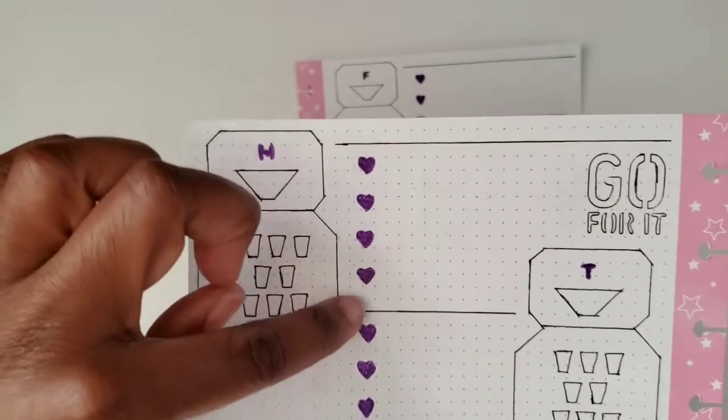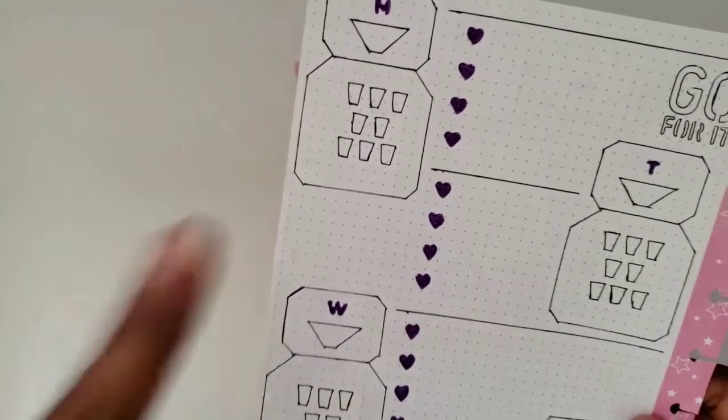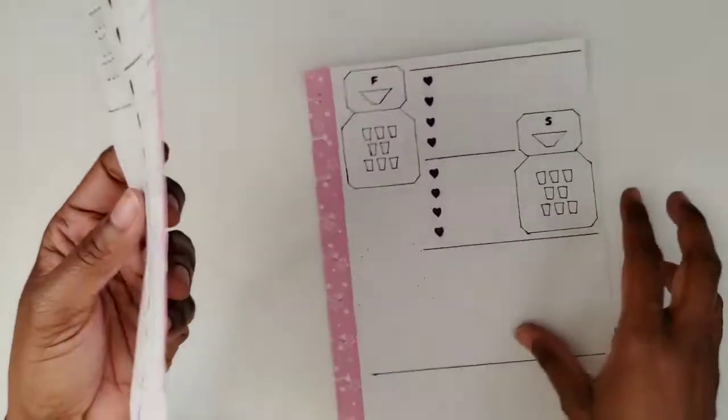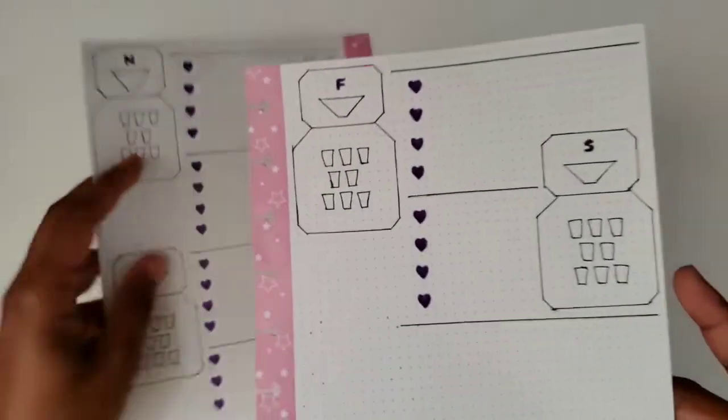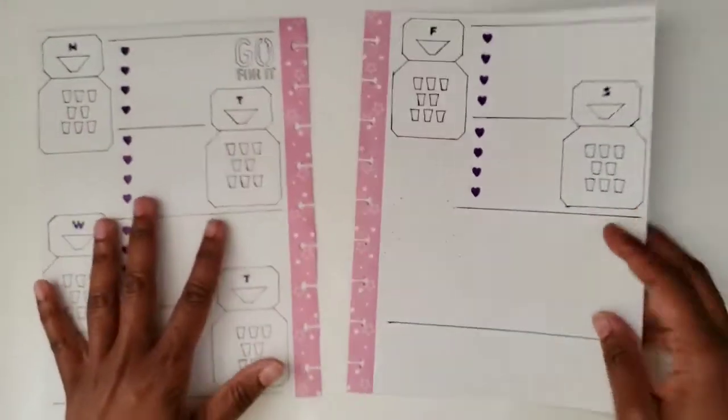I still need to put the actual date on these. Then I put some little cups to track my water. And so I use my stencil kits that I got from Walmart, the pen and gear ones. I use these little hearts for my bullet points. And I have a few other things here.